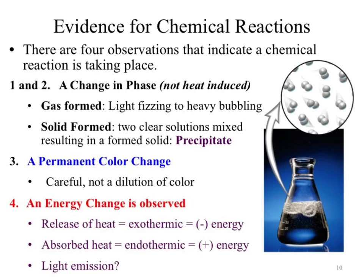Our evidence for chemical reactions — we've seen these before. The textbook separates this into four rules. Rules one and two are a change in phase, but that's a bit misleading. If you take ice and heat it up, it changes phase, which might make you say that's a chemical change — except it's not, that's a physical change. How do we know? It has to come from how the phase change occurred. A change in phase induced by adding or removing heat is a physical change, not a chemical change.